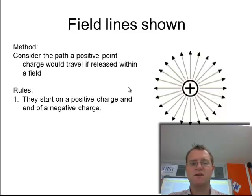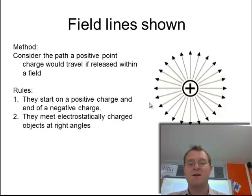The rules are: they start on a positive charge and end on a negative charge. So here they're just starting. There's no negative charge so we just have them beginning. There's no ending to these points. They go off into infinity for this example. They meet electrostatically charged objects at right angles.